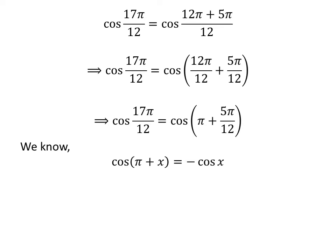We know the trigonometry identity cosine of (π + x) is equal to minus cosine of x. The proof of this identity is given in the video appearing in the upper right corner, and the link is also given in the description section. So, cosine of 17π/12 is equal to minus cosine of 5π/12.